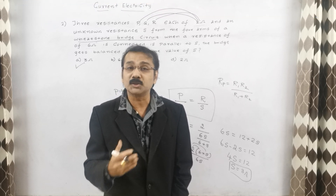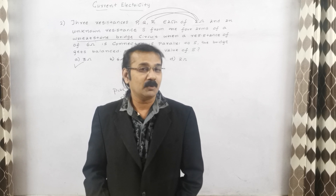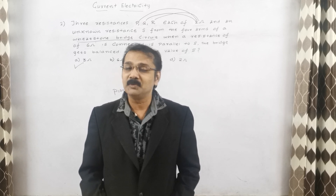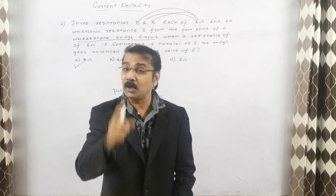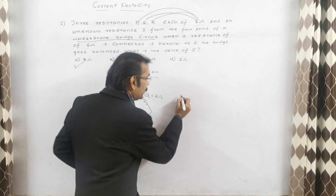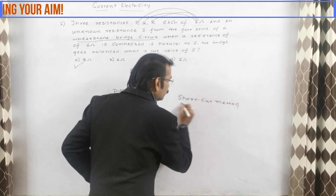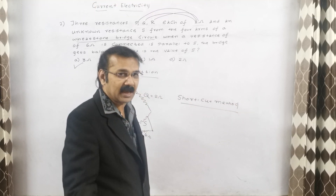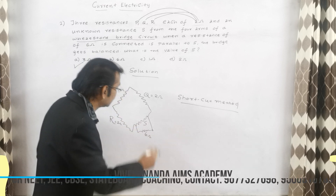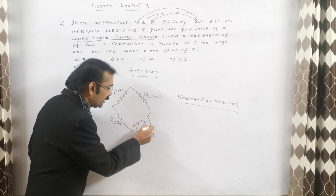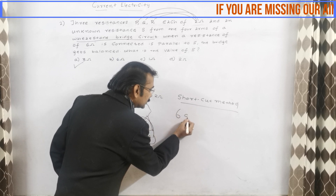Now it is time to go for the shortcut method. Without using any concept and without using any formula, we are going to do this in a fraction of seconds, no more than two steps. So please note it down. Now we are going for the shortcut method — we can minimize the time. Just see which is the greatest number out of all the given values. The greatest number is 6. Make a circle around it, multiply 6 and S, and write 6S. This is the first step.